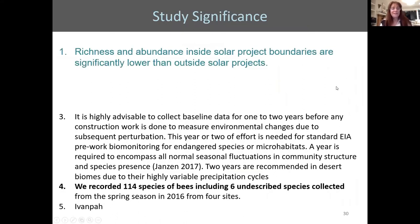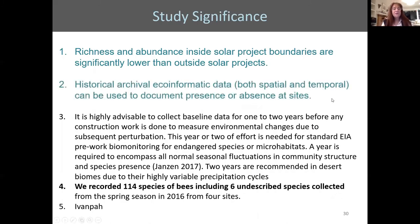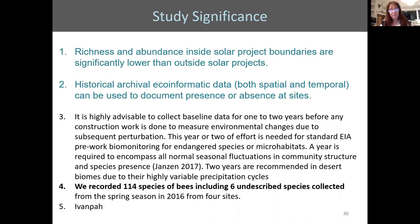The key findings: richness and abundance inside solar project boundaries are significantly lower than outside. Historical archival data — both spatial and temporal — can document presence and absence, and we found roughly 60 species in museum collections that we did not find in our survey, either because of the severe drought year or because they are no longer present. We strongly recommend conducting a baseline survey before construction begins so we know what's there before any disturbance. We found 113 species in total.